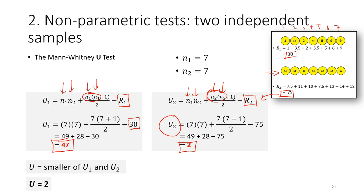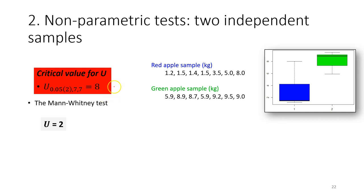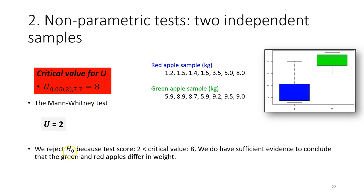After performing the statistical test, we compare the test score with the critical value. The critical value for this test is 8 and our test score is 2. Since 2 is smaller than 8, our test score is less than the critical value, which means we reject the null hypothesis. Our conclusion is that we have sufficient evidence to conclude that the green and red apples differ in weight. Remember: for the Mann-Whitney U test, we reject the null hypothesis when our test score is smaller than the critical value.